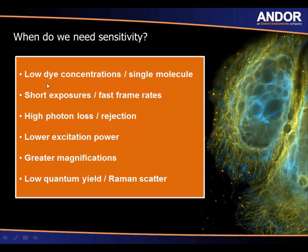In terms of life science applications, there are various different scenarios. If you're looking at a sample with very low fluorescent dye concentrations or single molecules, you'll need a very sensitive detector. Also, for live cell imaging where you want to look at dynamic events happening over time, the faster you can look at these events the better, especially if they're very dynamic processes. To capture very fast dynamic processes, you need short exposure times to get fast frame rates.